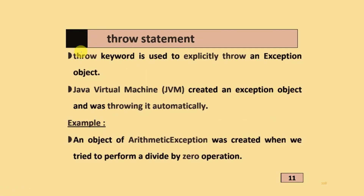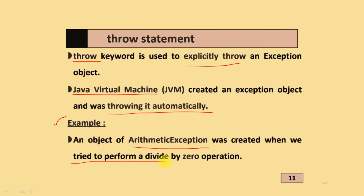The throw statement uses the throw keyword to explicitly throw an exception object. The Java Virtual Machine creates an exception object and throws it automatically. An example is an arithmetic exception, which is created when we try to perform a divide-by-zero operation.